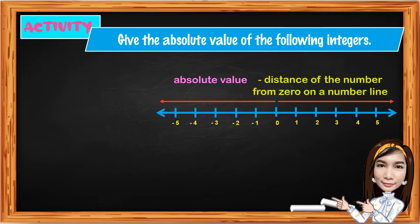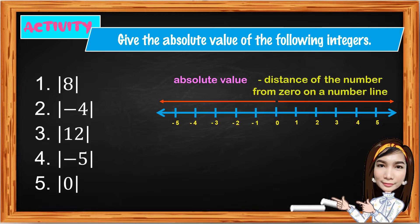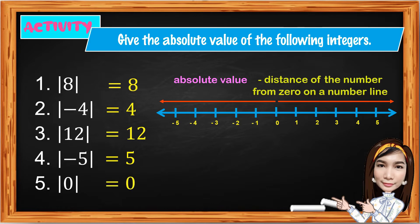It is denoted by two bars. The absolute value of 8 is positive 8. The absolute value of negative 4 is positive 4. The absolute value of positive 12 is positive 12. The absolute value of negative 5 is positive 5. And the absolute value of 0 is 0, because 0 is neither positive nor negative, so it has no sign.